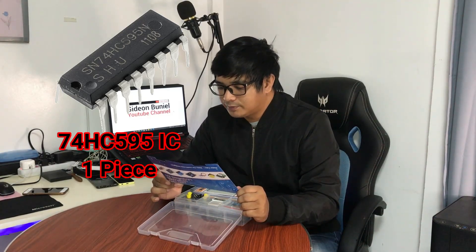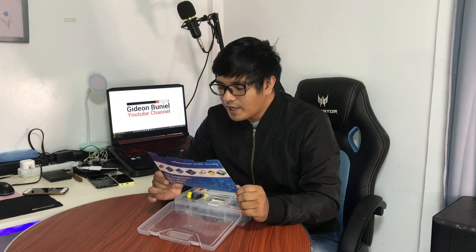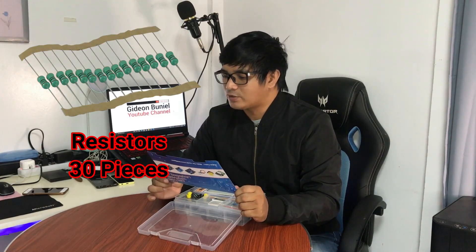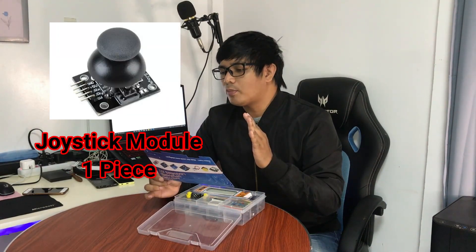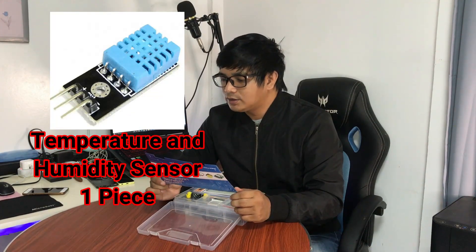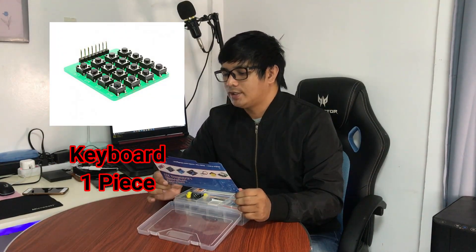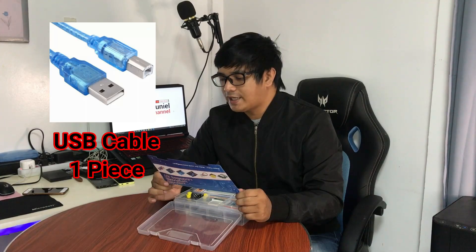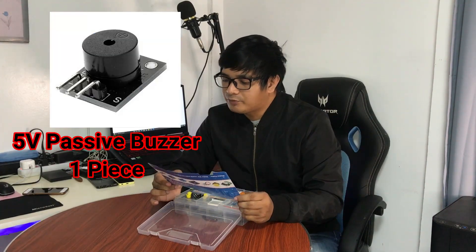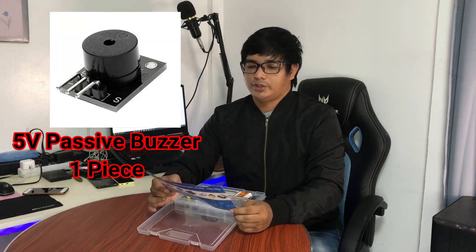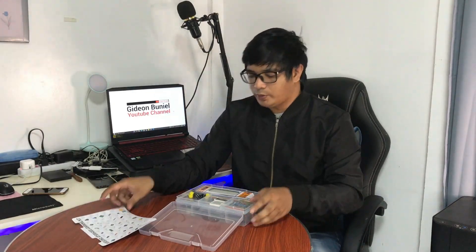And we have 74HC595 one piece, we have resistor 30 pieces, we also have joystick module one piece, we have DHT11 temperature and humidity module one piece, we have keyboard one piece, we have USB cable one piece, and 5 volt passive buzzer. So those are the inclusions for this Arduino kit.